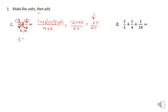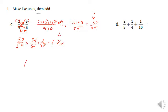57 fifty-fourths is a good answer. It's a fraction greater than one, and if we wanted to turn it into a mixed number we would take 54 fifty-fourths and add another three fifty-fourths to equal 57 fifty-fourths, so that's equal to one and three fifty-fourths. This is also a good answer.